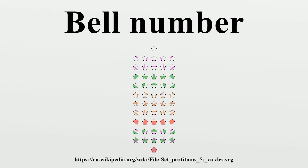The Bell numbers obey Touchard's congruence. If p is any prime number, then, generalizing from Touchard's congruence, the Bell numbers are periodic modulo p. For every prime number p — for instance, for p equals 2 — the Bell numbers repeat the pattern odd, odd, even with period 3.